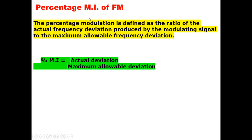Regarding percentage modulation index of FM: the percentage Mi is calculated as actual deviation divided by the maximum allowable deviation. The percentage modulation is defined as the ratio of the actual frequency deviation produced by the modulating signal to the maximum allowable frequency deviation. This tells you the margin.